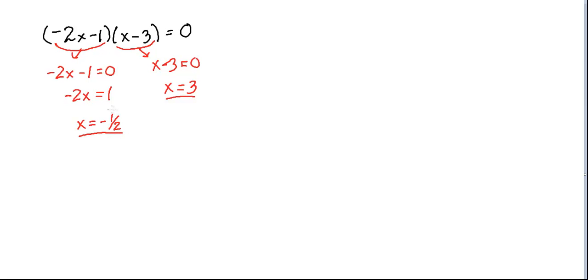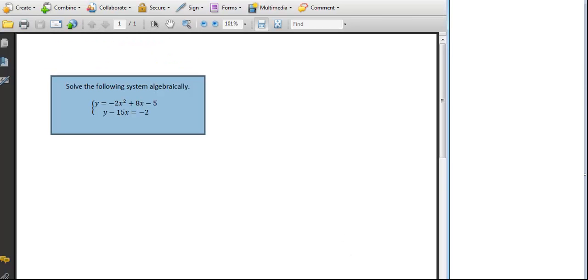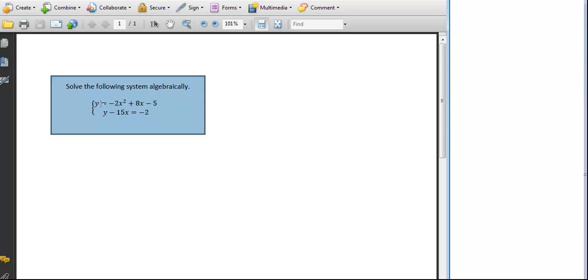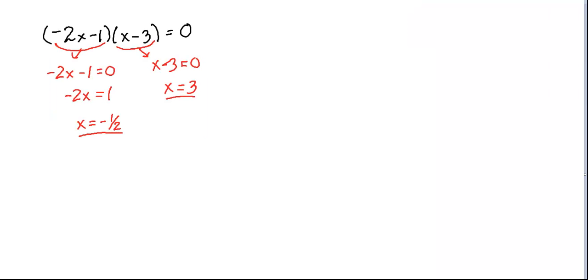Alright, so I've got those solutions. If I go back to the original system, if I'm looking at these equations, it looks like the easiest one to plug into is this one here at the bottom. So y minus 15x equals negative 2. So now for this one here, I'm going to go ahead and say, alright, y minus 15x equals negative 2.